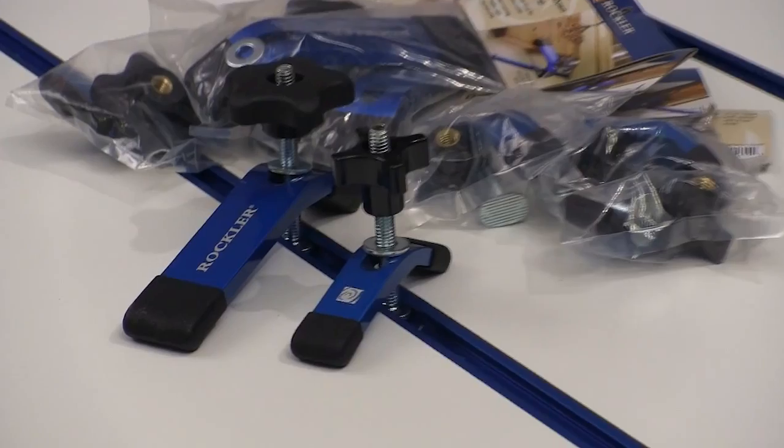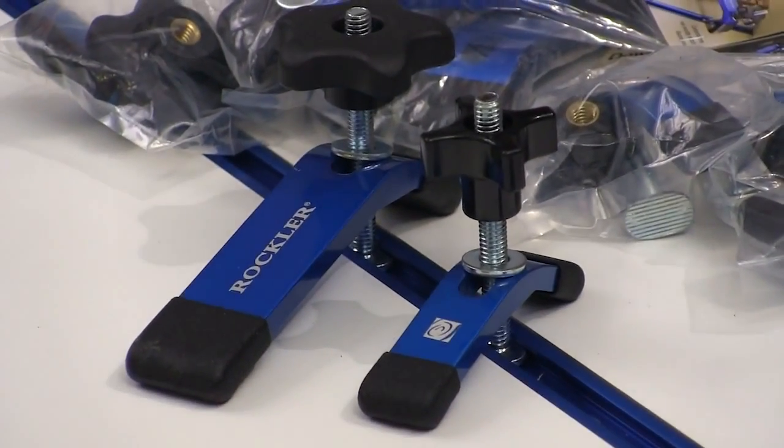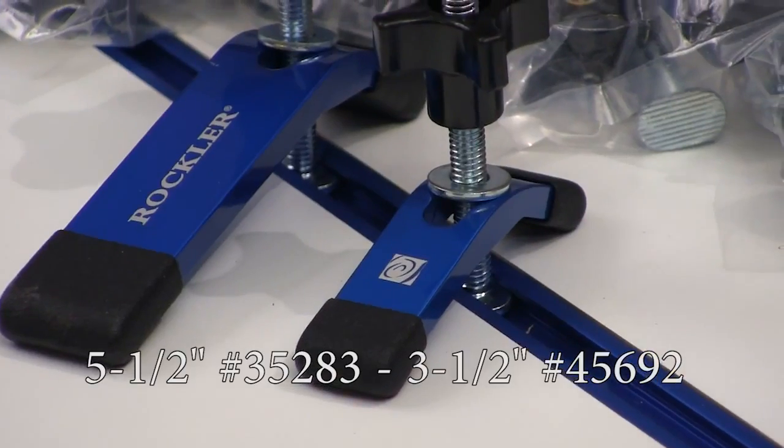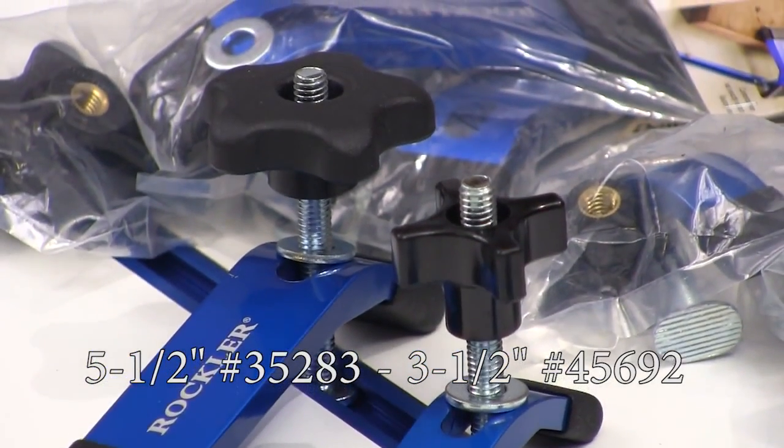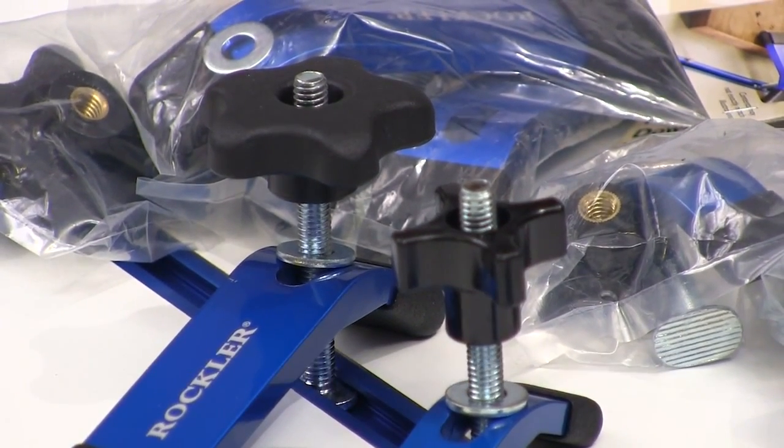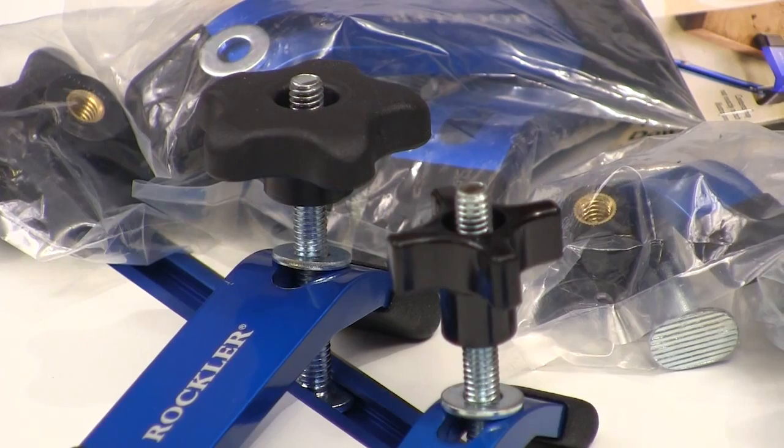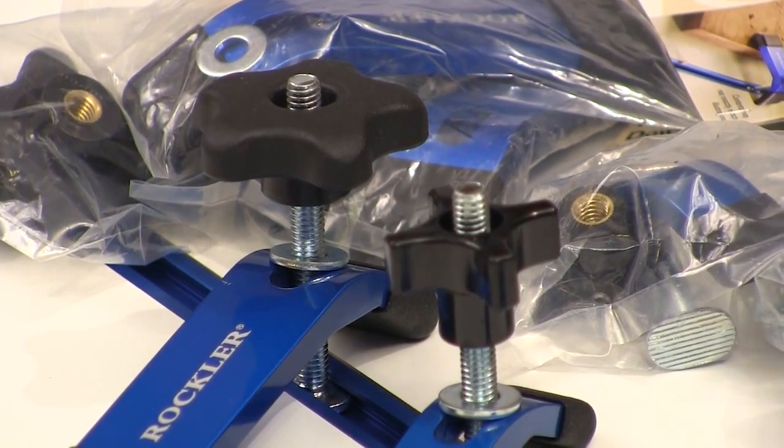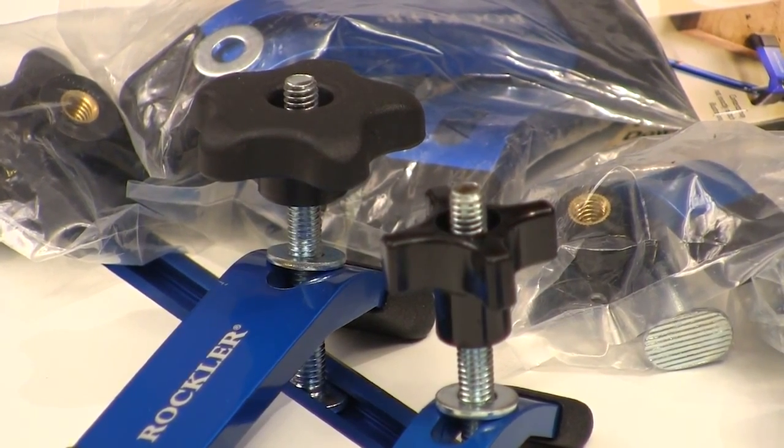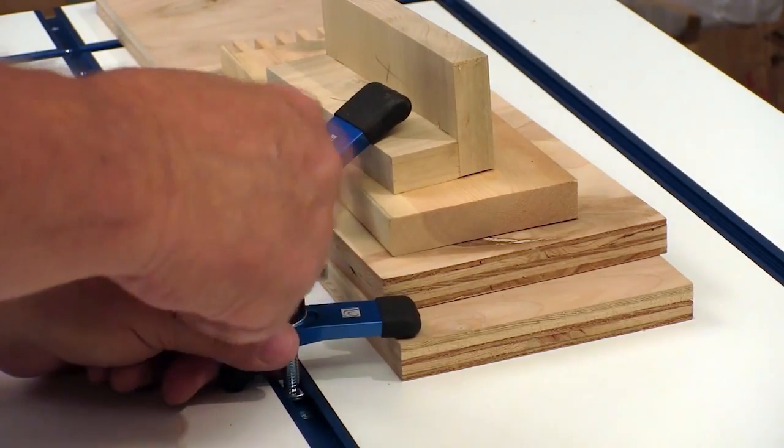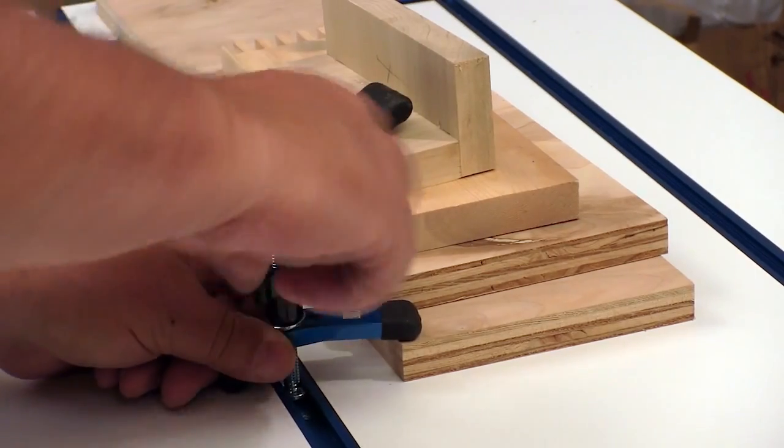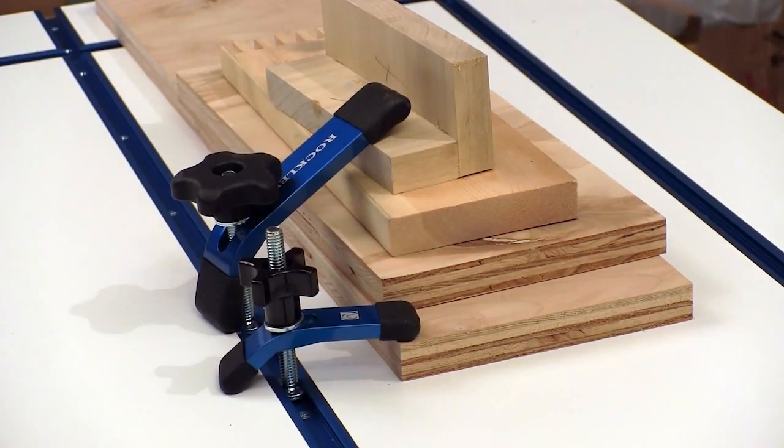One of the first things I needed with my new tabletop was to hold things down so I could work on them, and Rockler offers a five and a half inch long and a three and a half inch long hold down clamp that work on this table. Both versions feature star knobs that make applying pressure a lot easier. Both ends of these clamps have rubber protectors so they don't mar up your table surface or the wood you're working with.